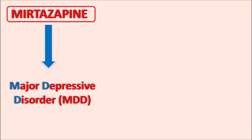What is Mirtazapine? This is one of the atypical antidepressants indicated for the treatment of major depressive disorder (MDD), commonly known as depression. During depressive disorder we can observe symptoms like mood swings — sometimes the mood can swing from depression to mania, where mania is a hyperactive state. This is called bipolar depressive disorder, and Mirtazapine can reduce the depressive phase.